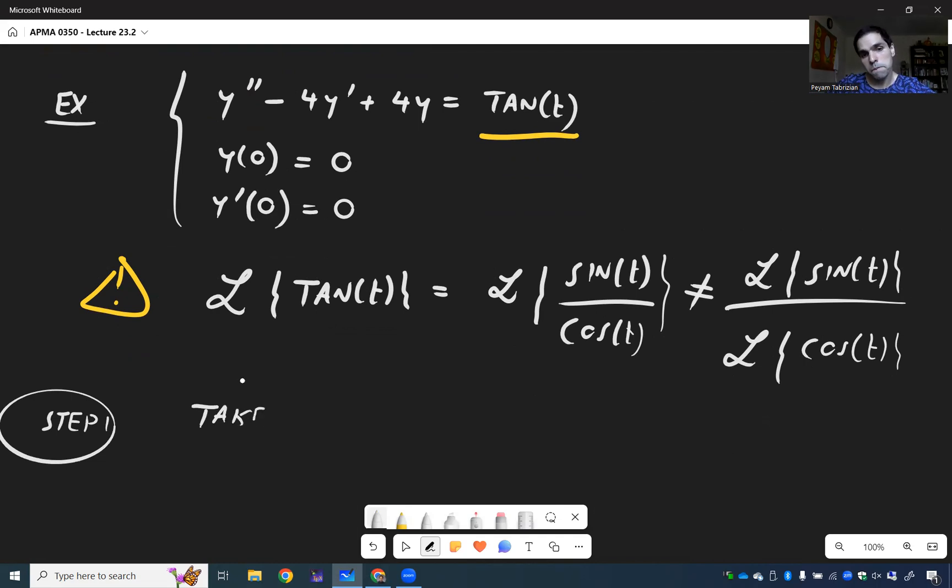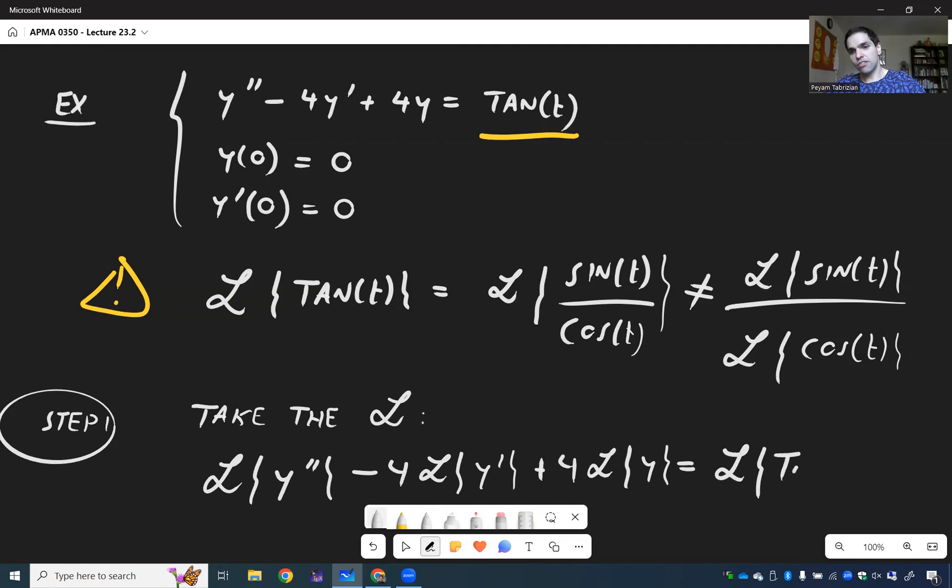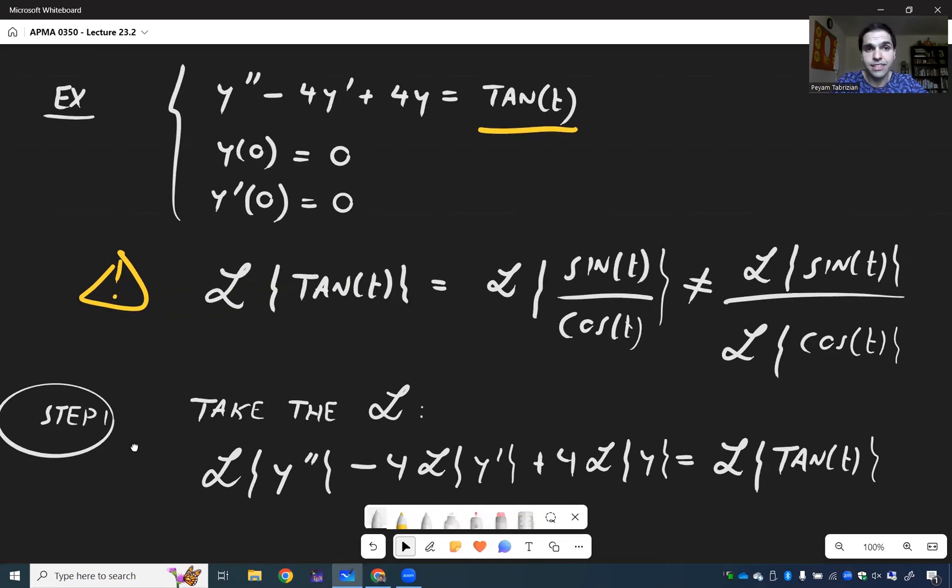So take the L. And then what we get is Laplace of y double prime minus 4 Laplace of y prime plus 4 Laplace of y is Laplace of tangent of t. There's nothing we can really do with the right-hand side. We leave it as is.